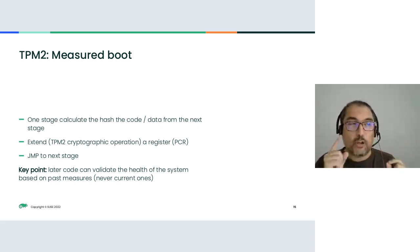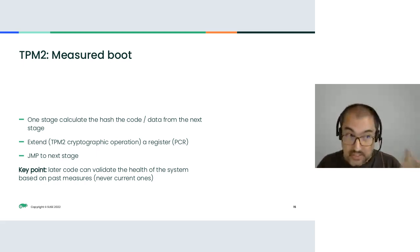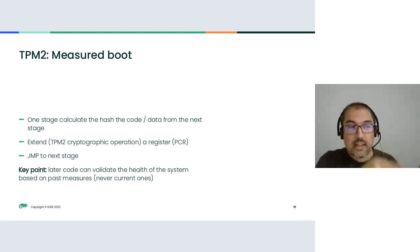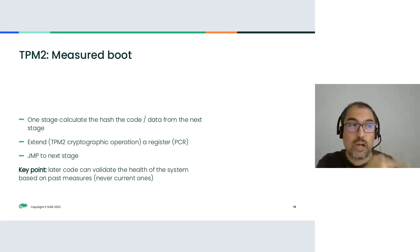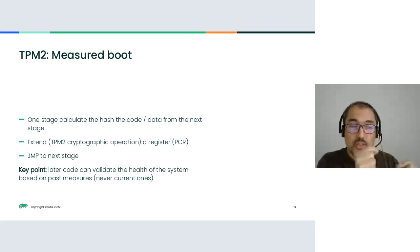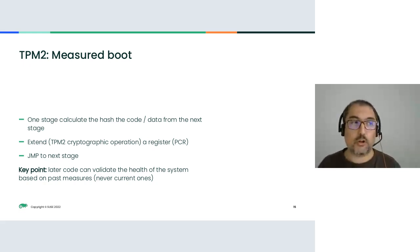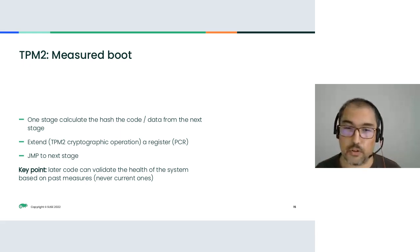The key point is that each stage measures the next one, so in the future the system can make assertions about its health. The value of a PCR is only such if all previous hashes match what you expect and were measured in the same order. The extend operation must happen in the same order with the same values — if something changes, the final PCR hash is completely different. This lets you make assertions about the health of your system.